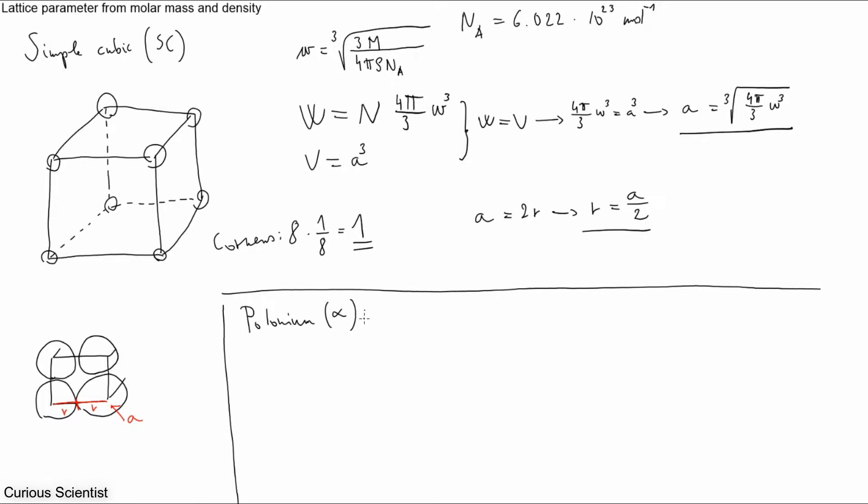Has a simple cubic structure. And then the corresponding atomic mass is 208.982 grams per mole, and the corresponding density is 9.196 grams per cubic centimeter. So we have everything now.